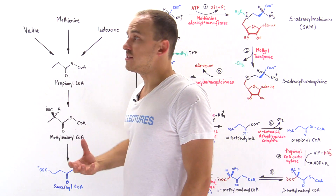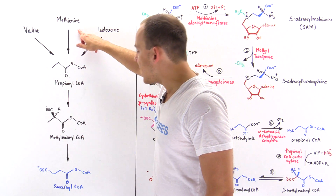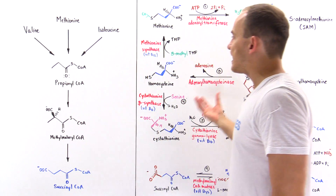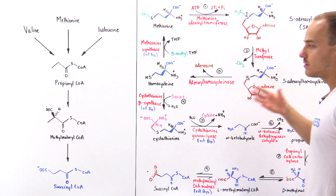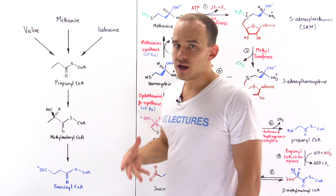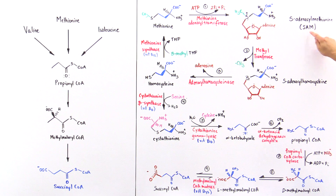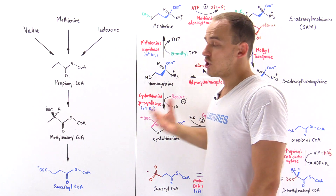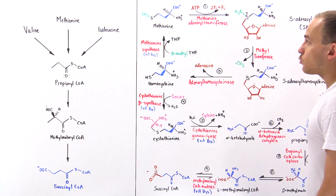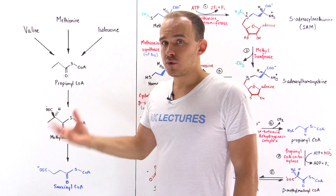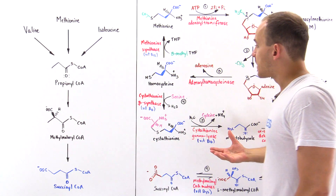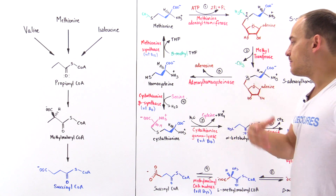We can see that the metabolism — the breakdown of methionine to succinyl coenzyme A — is actually quite complicated, and many important intermediate molecules are formed as a result. Namely, we form S-adenosylmethionine, one of the most important methyl donor molecules used by cells; we reform THF, which will become important when we talk about pyrimidine and purine synthesis; and we also form cysteine as a byproduct, which is one of the amino acids our body uses to generate protein molecules.